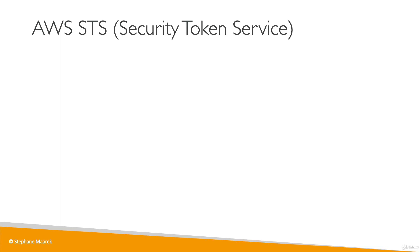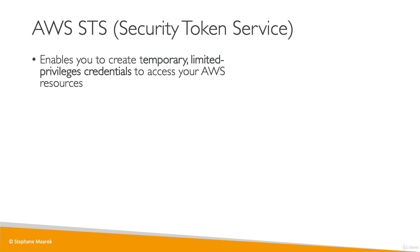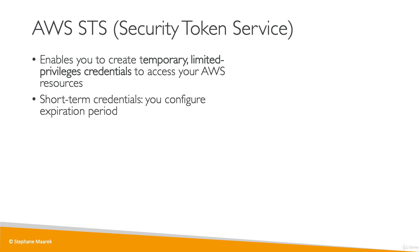There is a service we've been using behind the scenes without really knowing it, and it's at the center of AWS. It's called AWS STS, for Security Token Service. This enables you to create temporary, limited privileges credentials to access your AWS resources — short-term credentials, just like your access key and secret access key, but you can configure your expiration period.